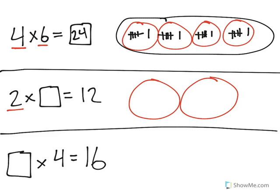The easiest way to do this is to add 1 to each group at a time until you get to 12. Counting up: 1, 2, 3, 4, 5, 6, 7, 8, 9, 10, 11, 12. And I can see that each group has 6.